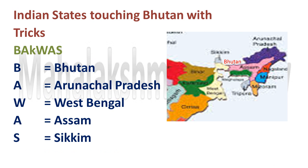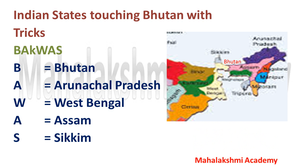The next one is Bhutan — states sharing boundaries with Bhutan. The trick is 'Bakwas.' B stands for Bhutan, A stands for Arunachal Pradesh, K is silent and was only used to frame the word, W stands for West Bengal, A stands for Assam, and S stands for Sikkim.